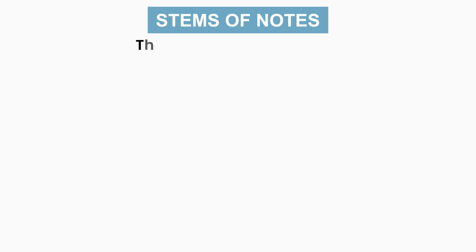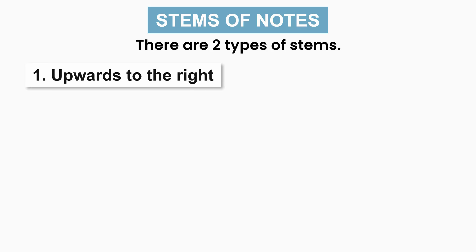There are two types of stems. Number one, upwards to the right, and number two, downward to the left.